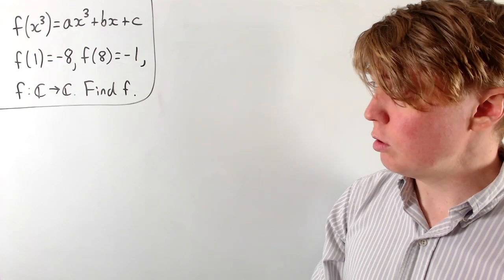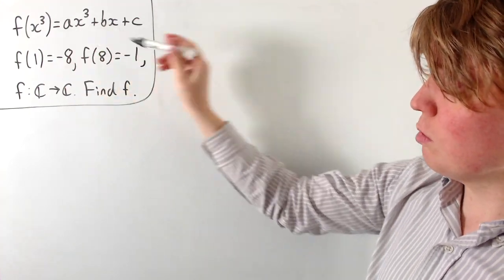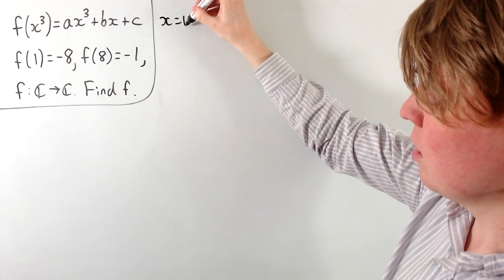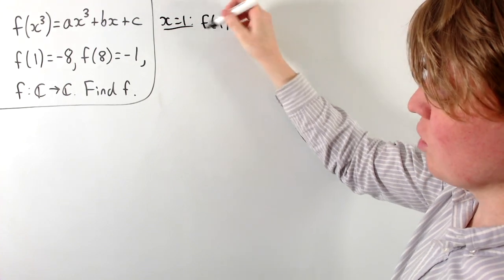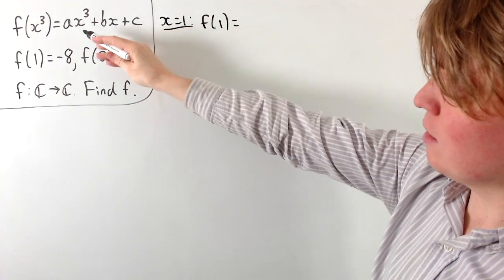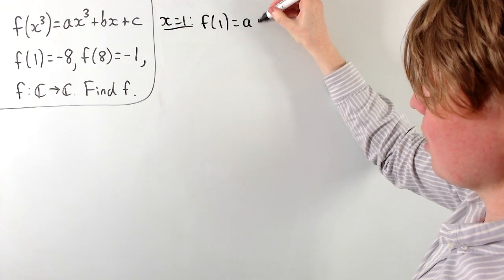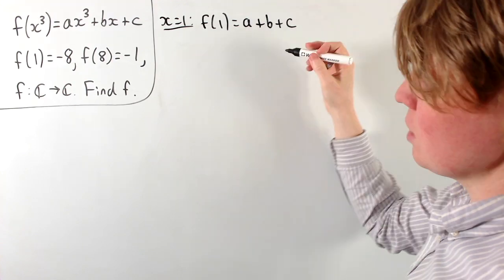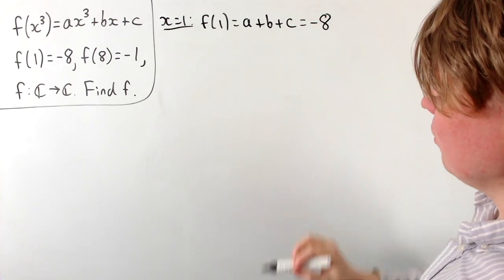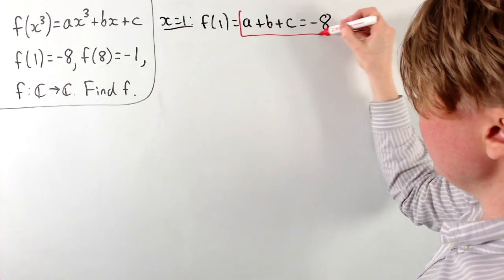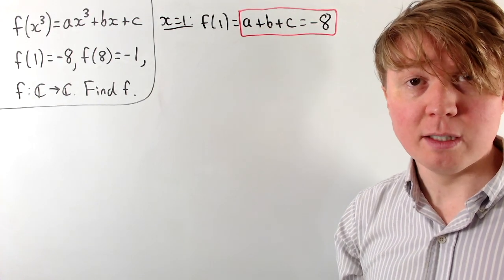To get started, we can use the known value f(1) = -8 and substitute x = 1 into the functional equation. So we get f(1) = a times 1 cubed plus b times 1 plus c, which is just a + b + c. Since f(1) = -8, we have our first equation: a + b + c = -8, linking all of our constants.